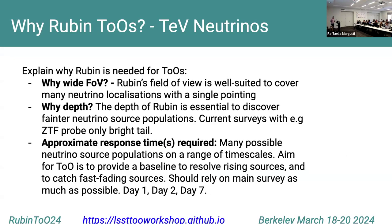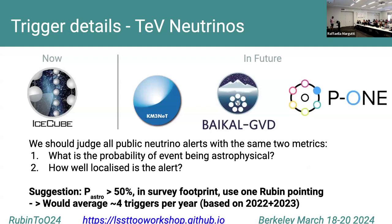Why Rubin TOOs for neutrinos? Neutrinos are often well-localized within four or five square degrees, so one Rubin pointing is perfect. Rubin is deep enough. For the appropriate response time, we want to go as fast as possible to establish a baseline, then one day later to catch fast-fading or rising transients, and perhaps an additional epoch after seven days. There is only IceCube right now, but more observatories are coming. We should only trigger on things Rubin can cover substantially with one pointing. If we trigger on every IceCube alert with astrophysical probability greater than 50%, we'd get four triggers per year — approximately 20–30 minutes per year of time — so it's very cheap.